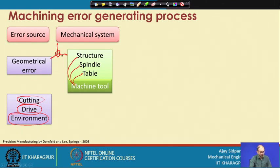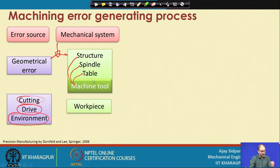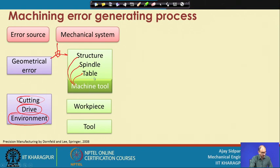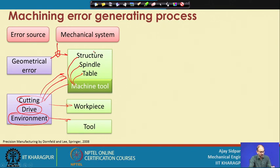If those orthogonality conditions are not met, you end up with geometric errors. The machine tool is a standalone component, but we add a workpiece - because we want to shape it - and we also need a tool. The tool and workpiece selection depends on the machine tool specifications. Cutting errors, drive errors, and environment errors are directly connected with the machine tool as well as with the tool and workpiece.